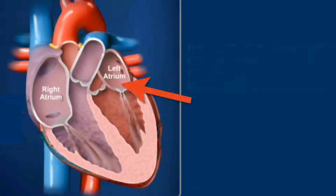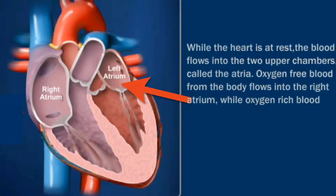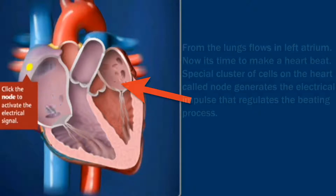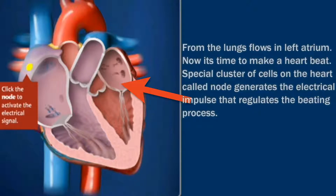Now you will see the flow of blood in the heart. First, filling the atria — while the heart is at rest, blood flows into the two upper chambers called the atria. Oxygen-free blood from the body flows into the right atrium, while oxygen-rich blood from the lungs flows into the left atrium.